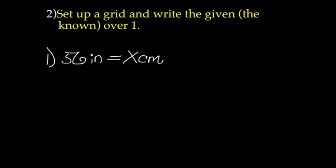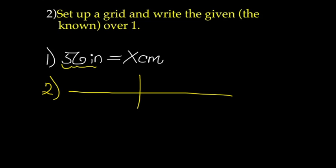Step two: we're going to set up a grid and write the given, or the known, over one. I call it a grid — some people call it a t-chart, but I don't use that term because later in the year our grid won't look like a t-chart. So we've written our grid, and now we take our known, which is 56 inches, and put that over one.